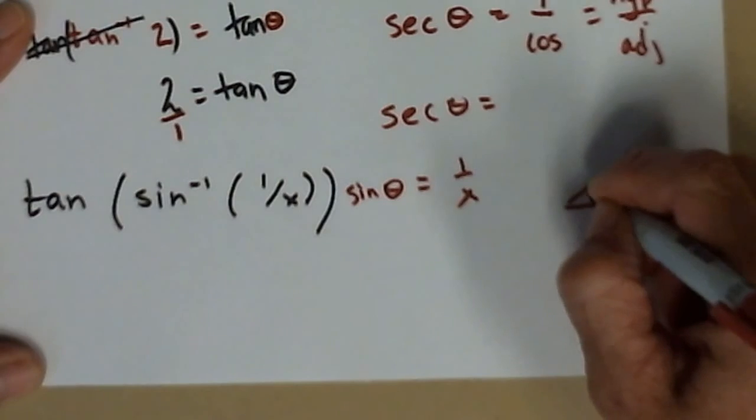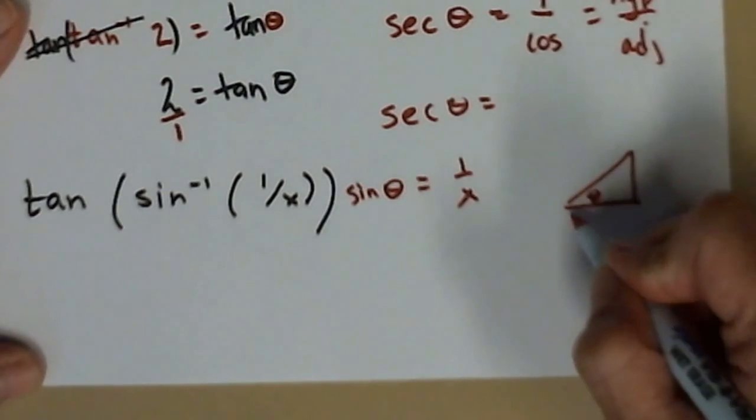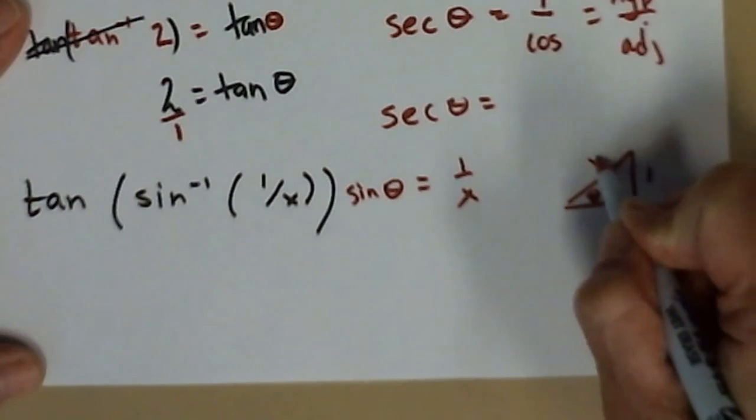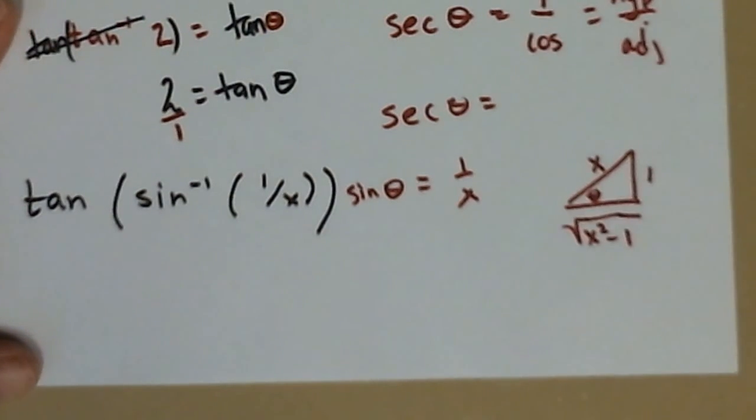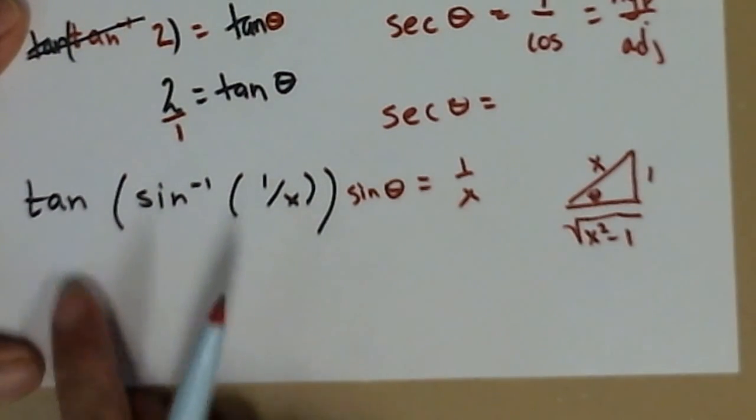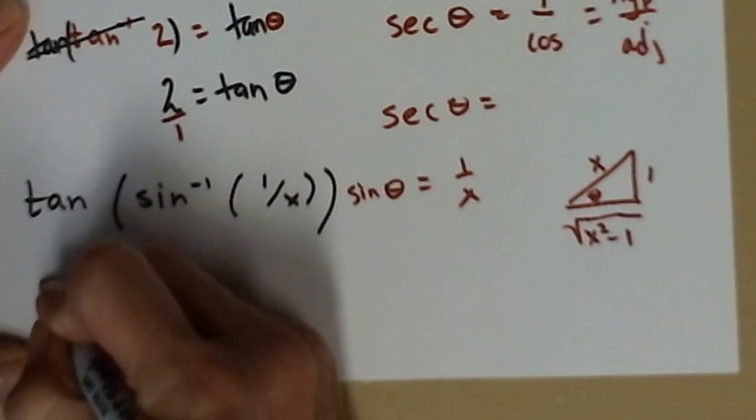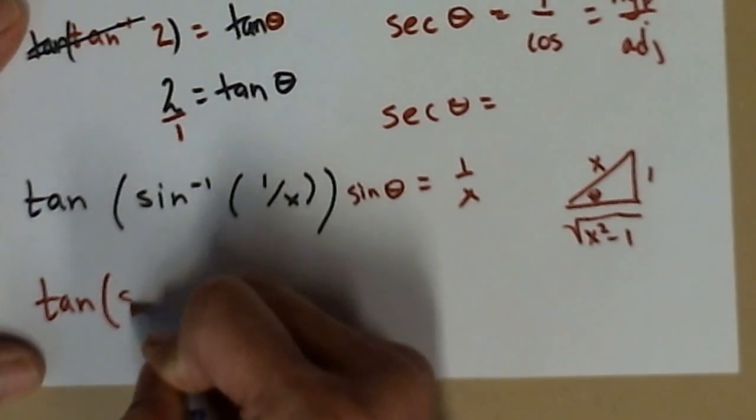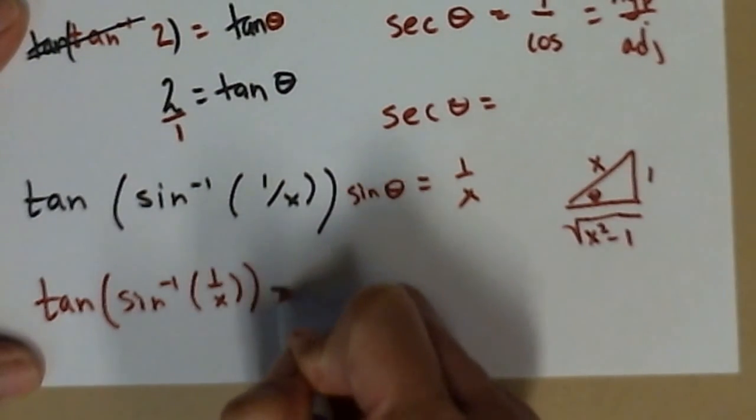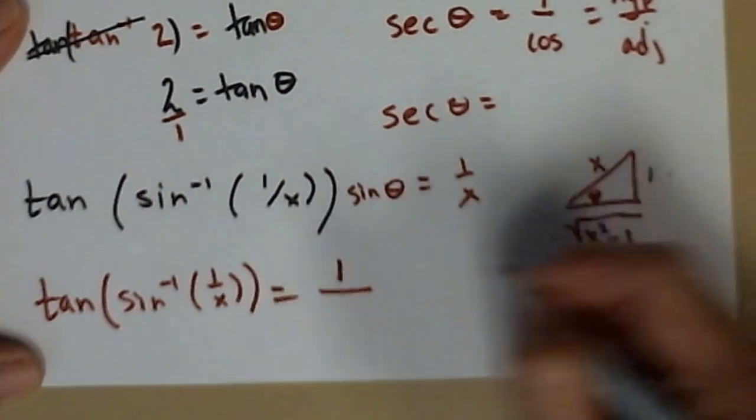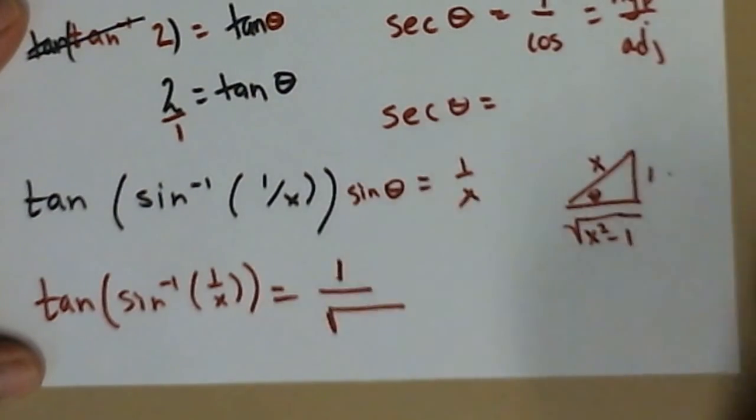Draw that triangle. Sine is opposite over hypotenuse. Pythagorean theorem to find the missing side. And then I need the tangent of theta opposite over adjacent.